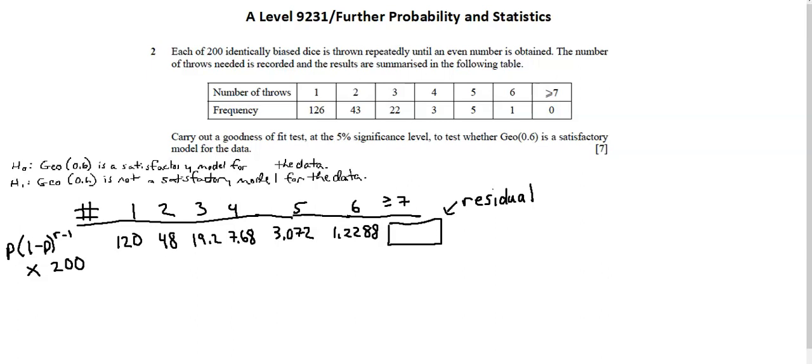6, and then the greater than or equal to 7 category. So the residual is coming from 200 minus 120 minus 48 minus the other values, all of 1 through 6.